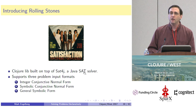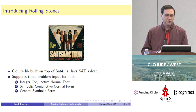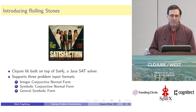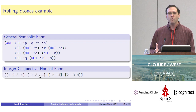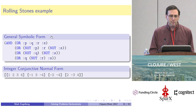I'd like to introduce another open source library I created called Rolling Stones. Rolling Stones is a Clojure library built on top of Sat4j, which is a Java SAT solver, and it supports three different problem input formats. That's a really big deal because the underlying solver, Sat4j, only supports one very specific format called the integer conjunctive normal form, and that's not always the most convenient way to work with a logical formula.